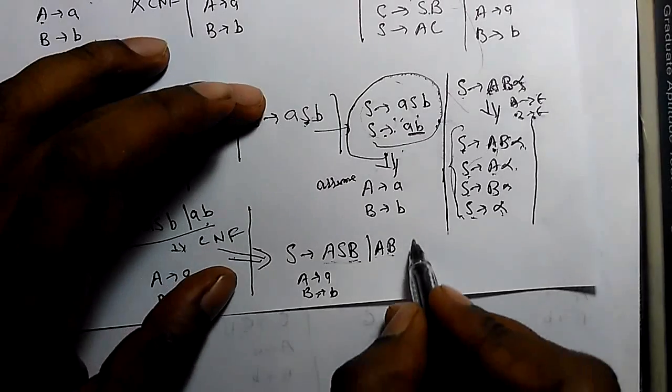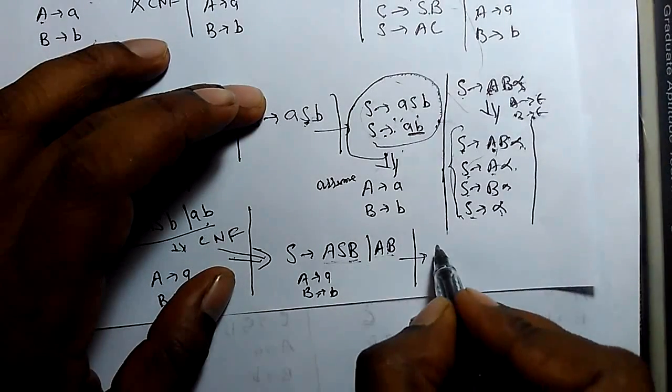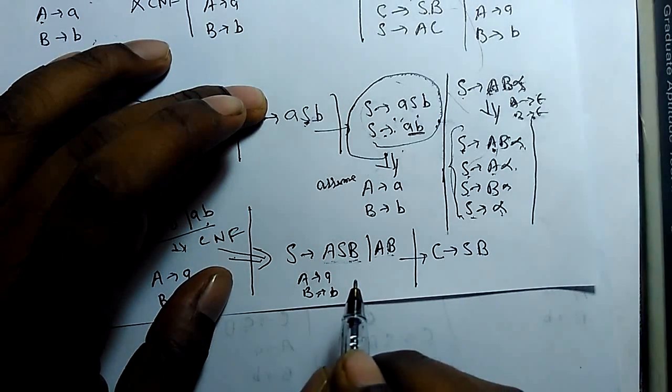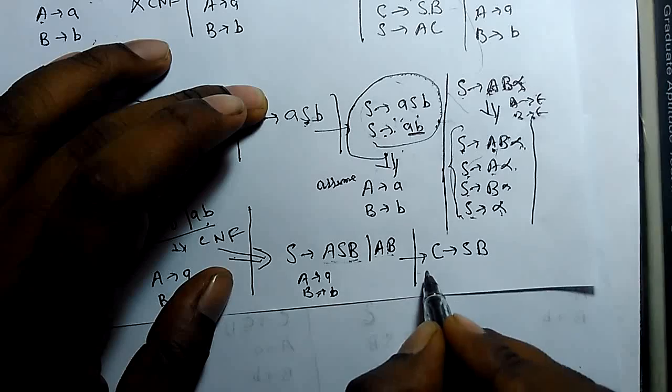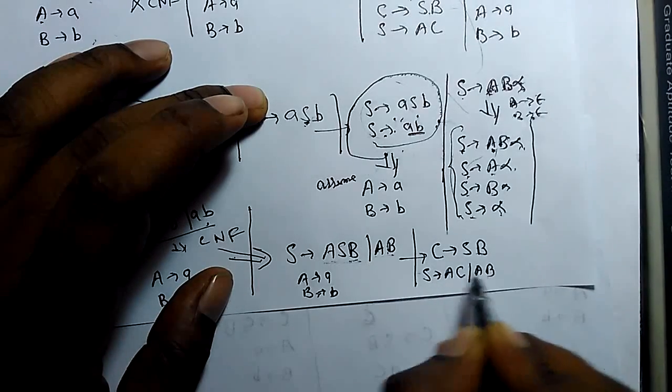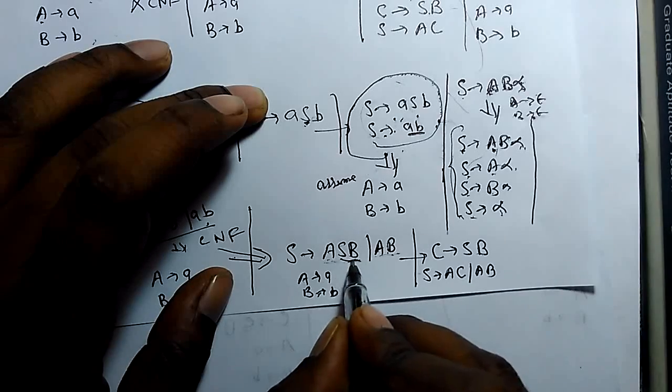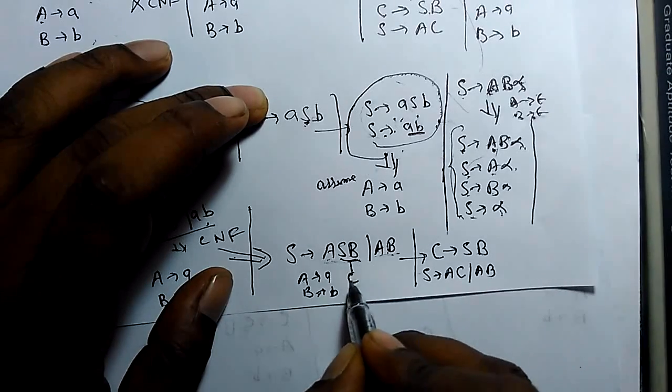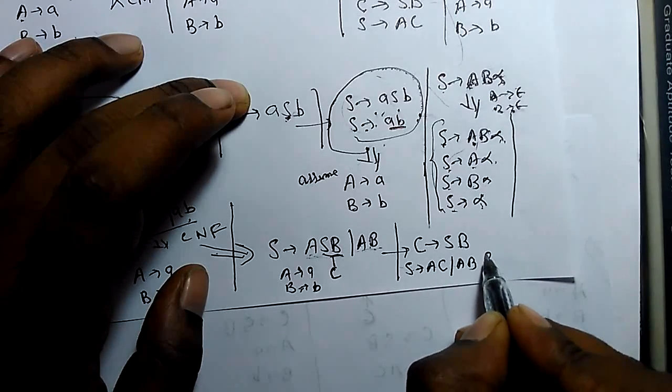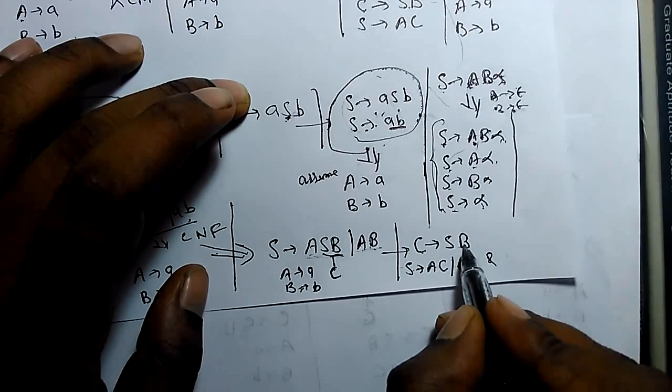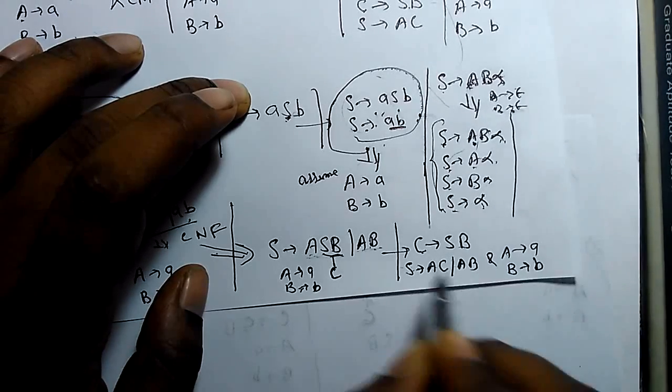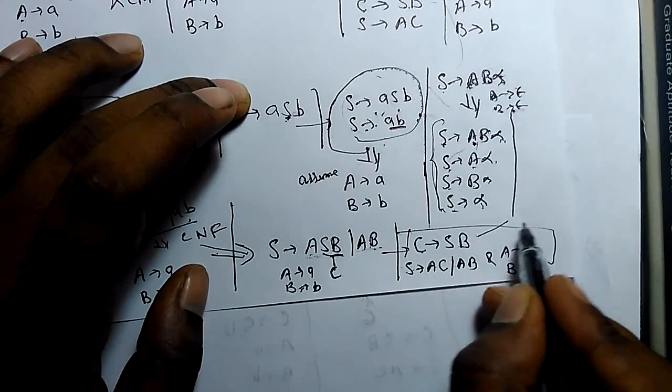So we will assume a new variable C that derives capital S and B. So the whole production will be converted into S derives AC or AB. AB as it is. SB will be replaced by capital C. A derives a, C derives SB, and B derives b. So this is in CNF.